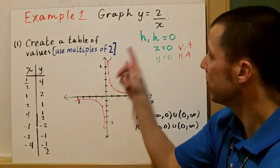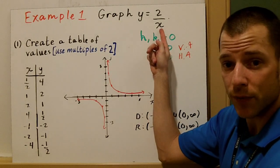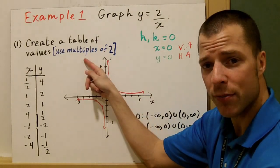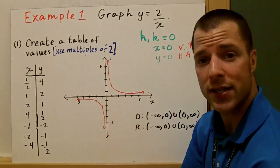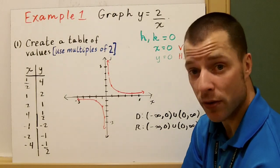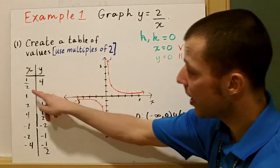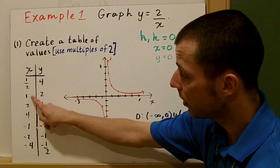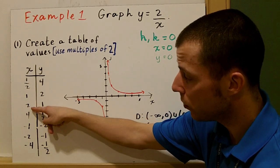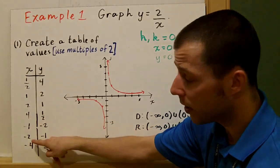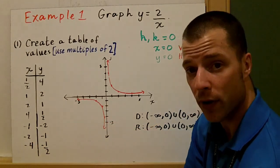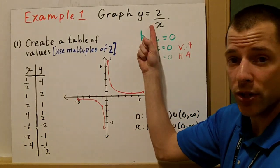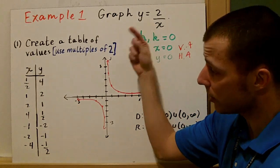I can use any x value except x equals zero, which would make the function undefined. I'm going to use multiples of two so that when I simplify the fraction it's easier. So I picked x values of one-half, 1, 2, 4, negative 1, negative 2, and negative 4. I plug each of these x values into my original equation.